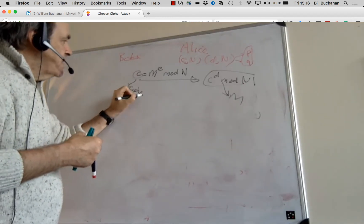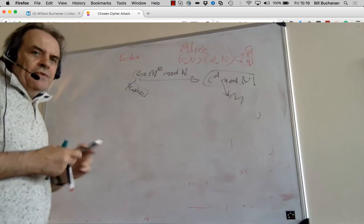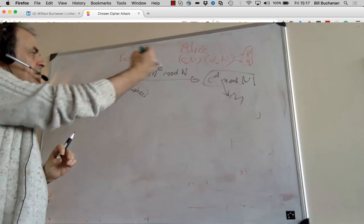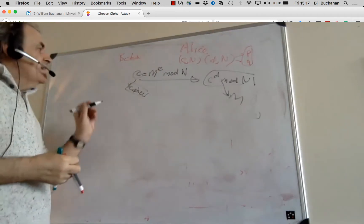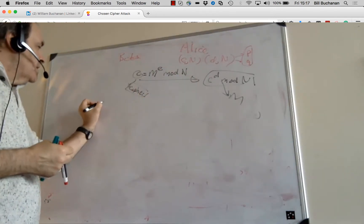He can't decode the cipher at all because he doesn't know the D, the decryption key value here.